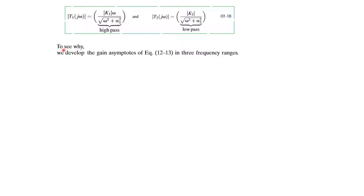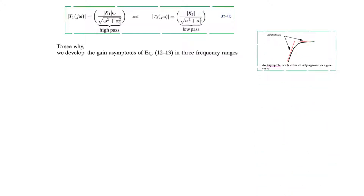To see why we get a stop band, we have to plot the straight-line asymptotes of these equations. We'll do that at three frequency ranges: low frequency, high frequency, and mid frequency. Just to remind you, asymptotes are the straight lines that follow the curves. We start with the low frequency case, where ω is much less than α2 and also less than α1.